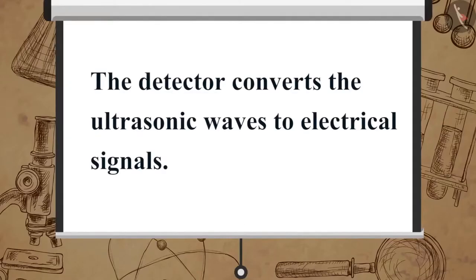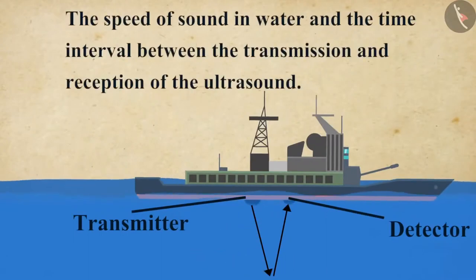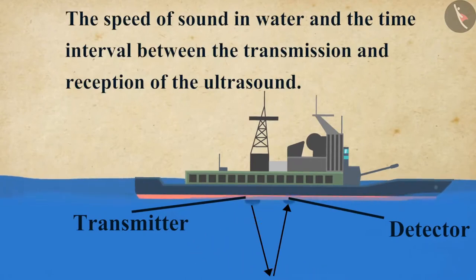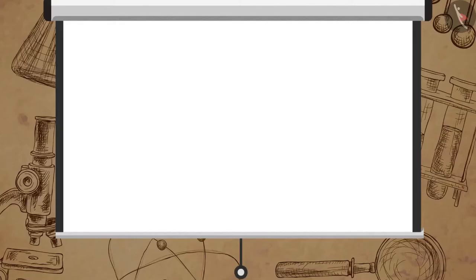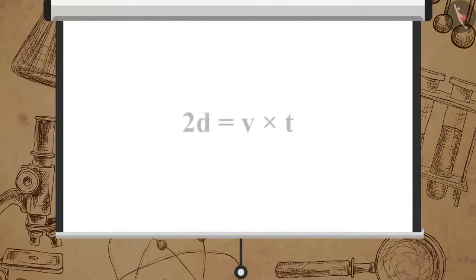The detector converts the ultrasonic waves to electrical signals. The distance of the object that reflected the sound wave can be calculated by knowing the speed of sound in water and the time interval between the transmission and reception of the ultrasound. The distance 2D travelled by the ultrasound can be written as 2D is equal to V multiplied by T.